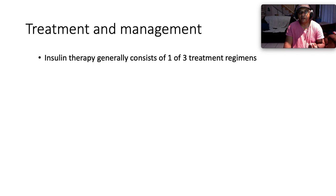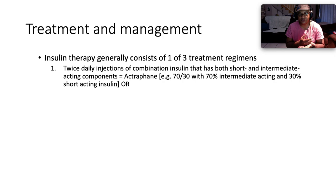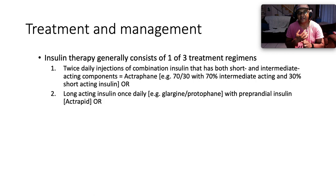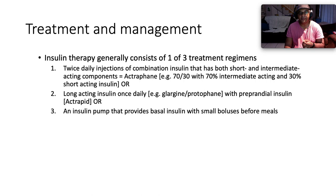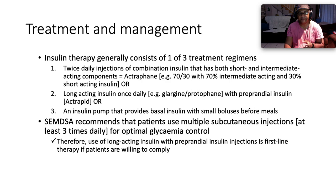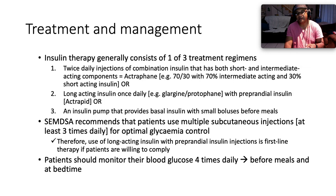Insulin therapy generally consists of one of three treatment regimens. First, two daily injections of combination insulin containing both short and intermediate-acting components — such as actraphane (70% intermediate, 30% short-acting). Second, the basal-bolus regimen: one long-acting insulin once daily, such as glargine or protophan, with pre-prandial short-acting insulin. Third, an insulin pump providing basal insulin with small boluses before meals. Guidelines recommend multiple subcutaneous injections at least three times daily for optimal glycemic control, making long-acting plus pre-prandial injections the first-line therapy in willing patients. Patients should ideally monitor blood glucose four times daily — before each of the three meals and at bedtime.